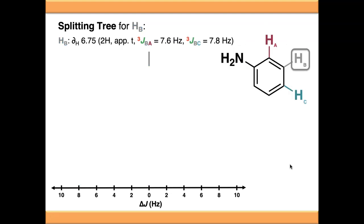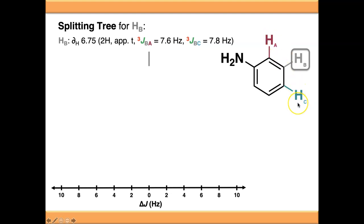What happens if we move to this scenario? You'll see in many research articles and textbooks that positions like HB are described as being a triplet, which if you're following the n+1 rule is technically correct - there are two protons it's coupling to. But as described at the beginning of the video, these two environments are not the same: one is ortho to the amine group and one is para. So these are not equivalent protons - they're not in the same chemical environment. This is not a simple multiplet; it's a compound multiplet.